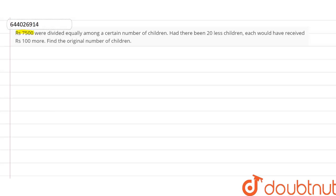Hello students, 7500 were divided equally among a certain number of children. Had there been 20 less children, each would have received Rs 100 more. Find the original number of children.